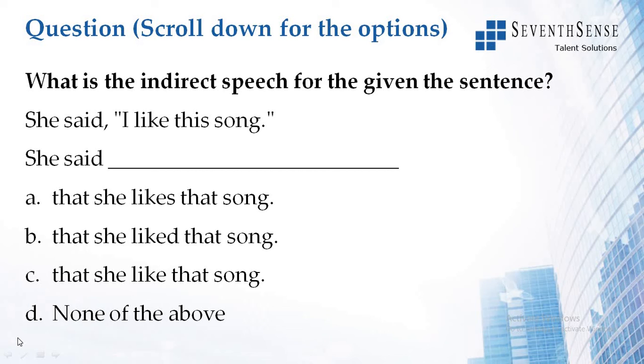So 'this' would be converted into 'that,' and 'like' in present tense would be converted to the past tense. We also have to add the conjunction 'that.' That is why it is option B.